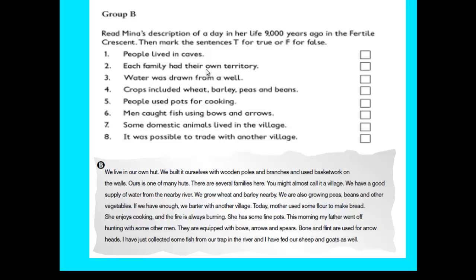Now, the first sentence: People lived in caves. No, it's false. Why? Because they lived in huts. Number two: Each family had their own territory. False. Three: Water was drawn from a well. No, it's false. Water was drawn from a river, a nearby river. Number four: Crops included wheat, barley, peas, and beans. Yes, that's true.